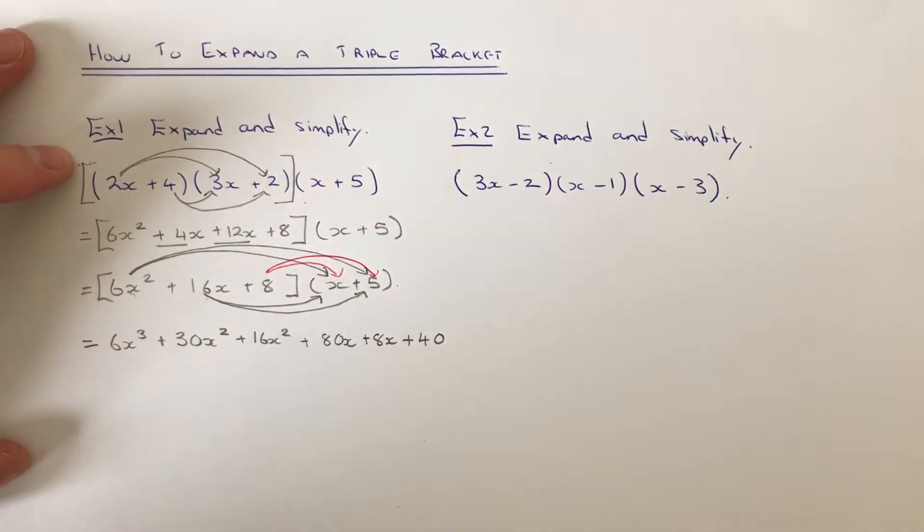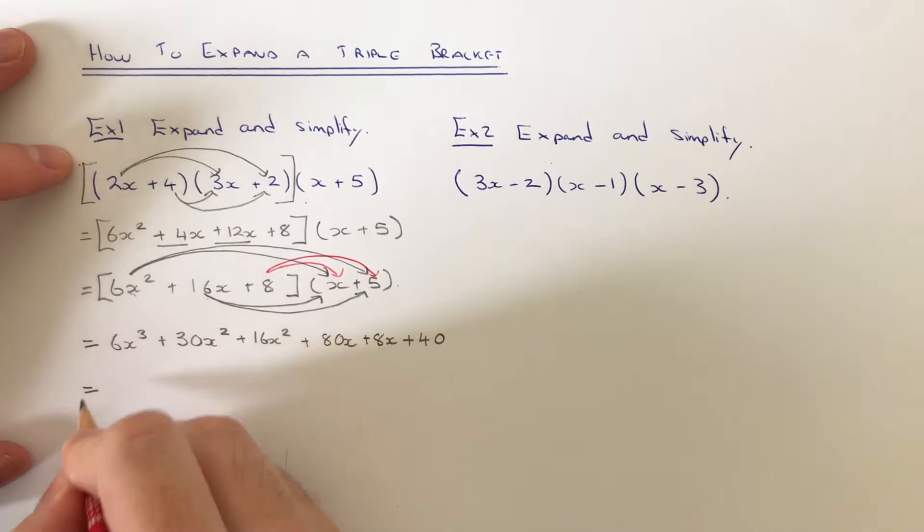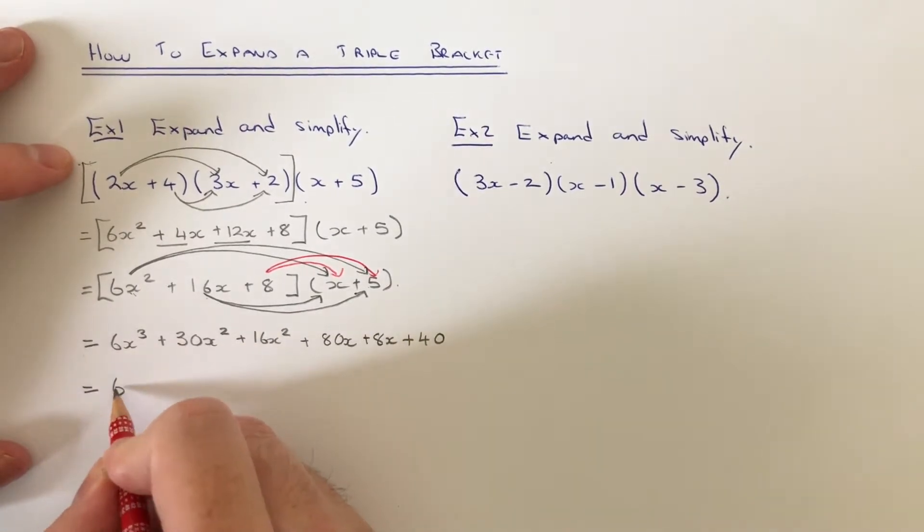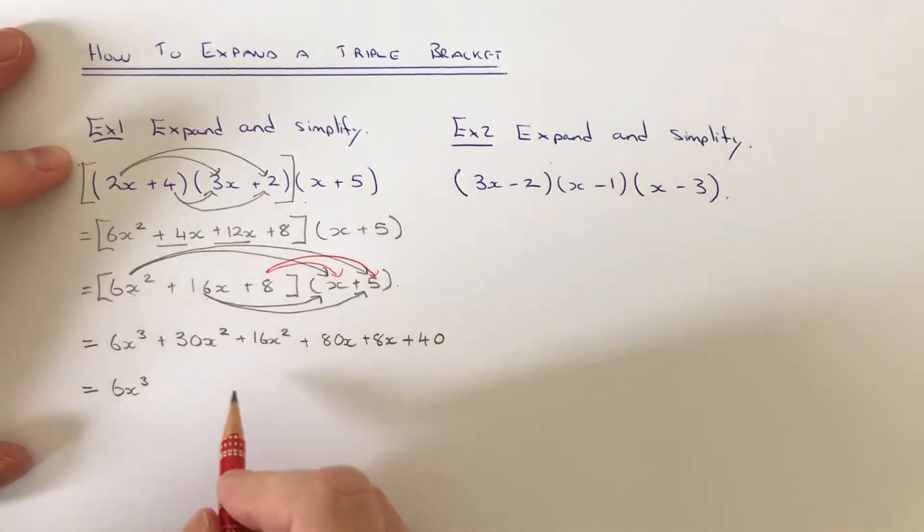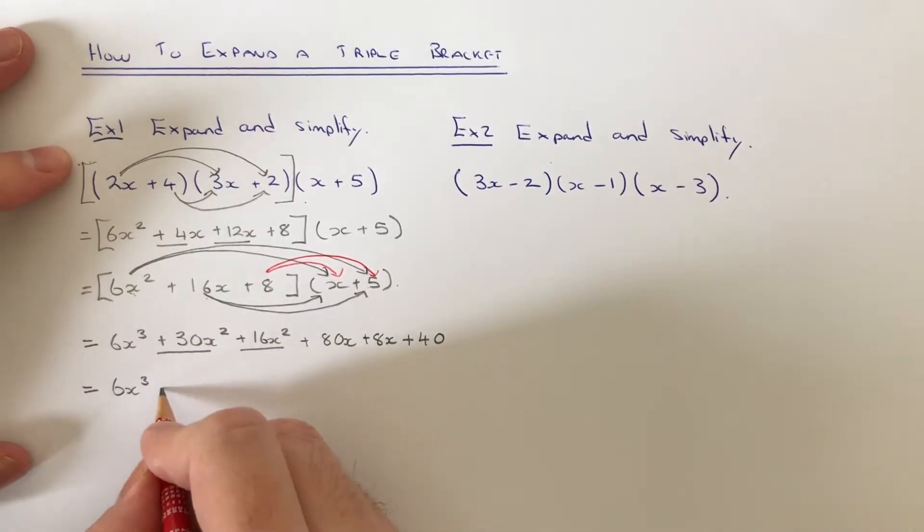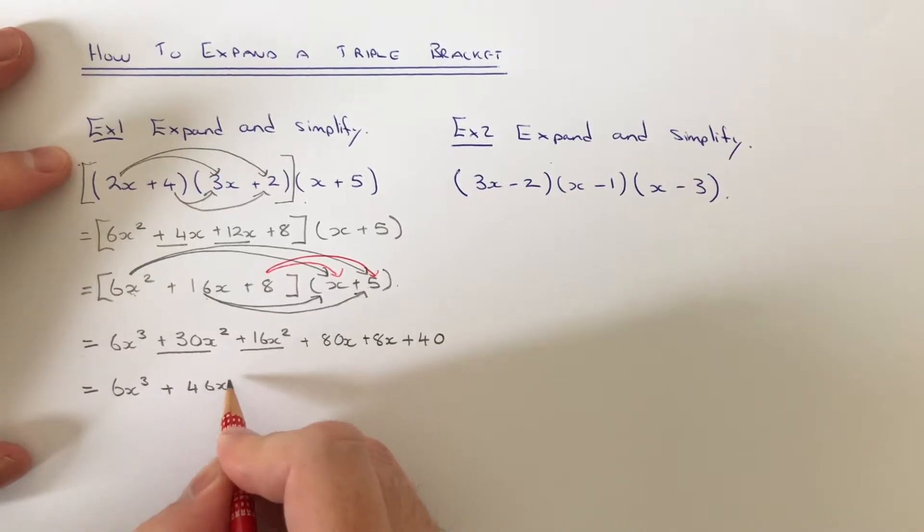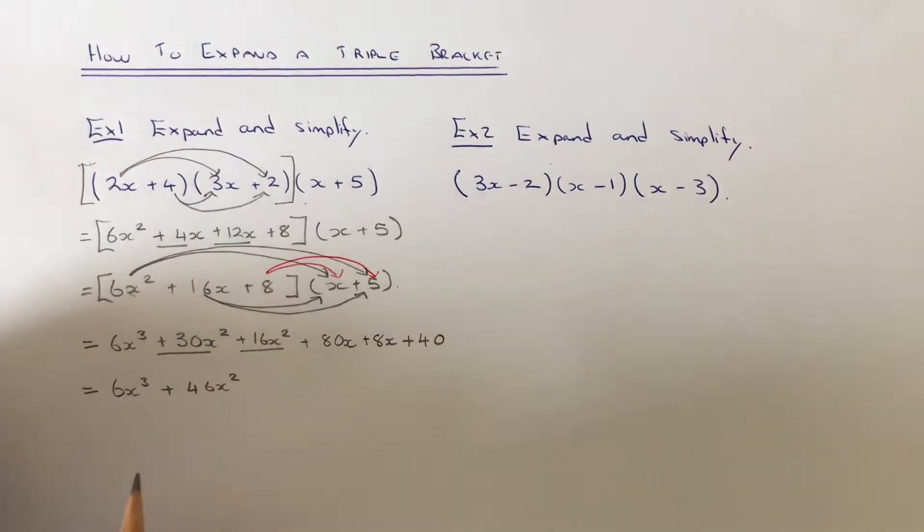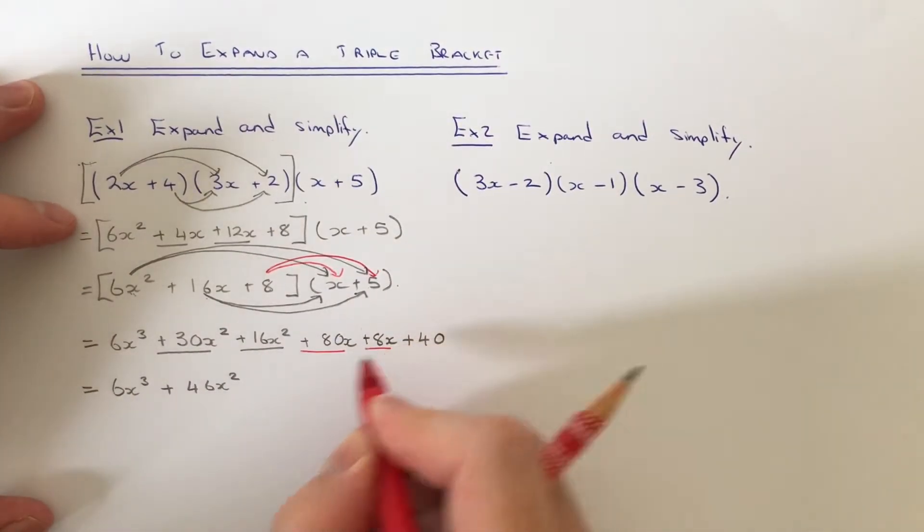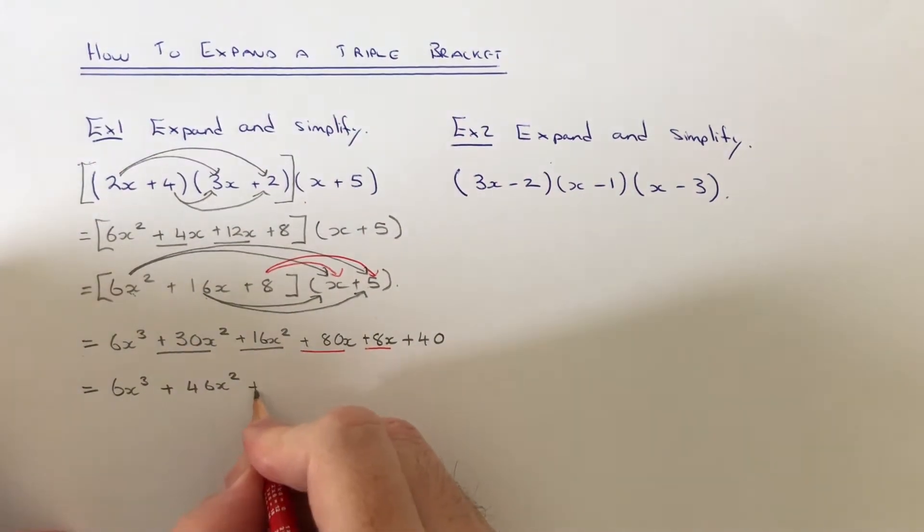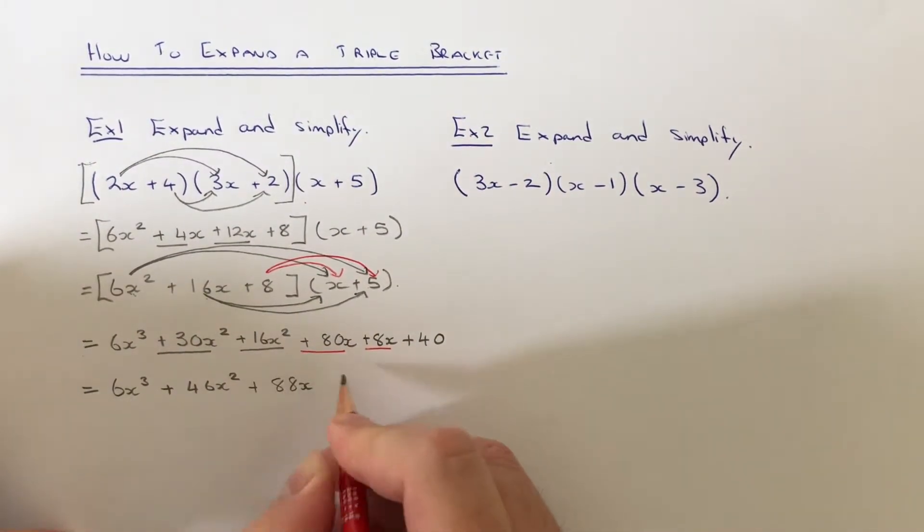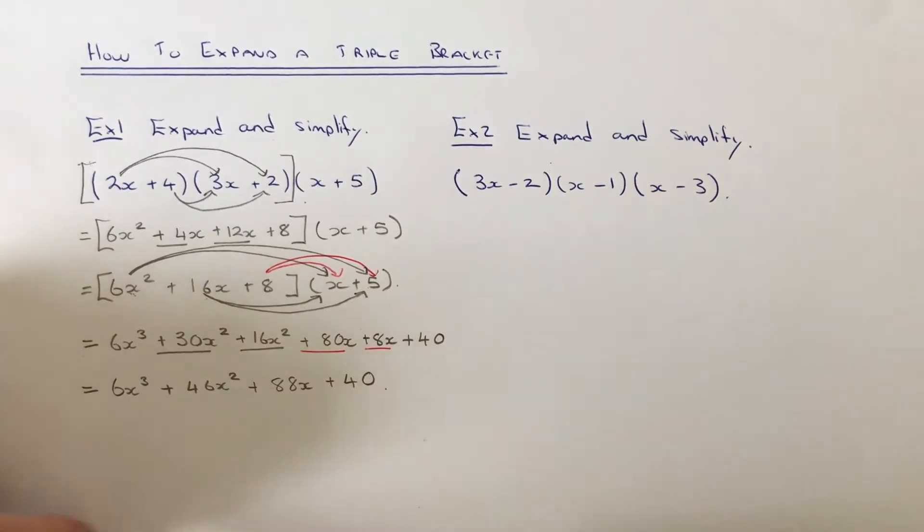We now just need to simplify this a little bit further. We've got no x cubes, so we can add the x squared together to give us 46x squared, and we can also add the x's together to give 88x. And we've got no numbers to simplify, so that's plus 40.